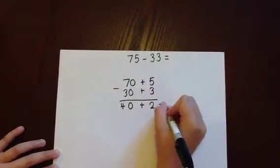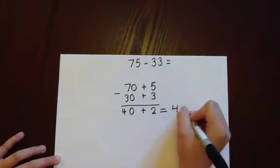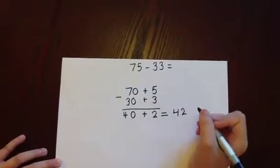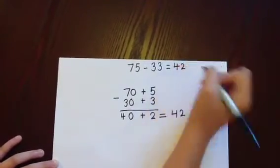We add those answers back together. 40 add 2 is 42. And there the answer of 75 subtract 33 has been found as 42.